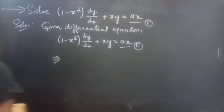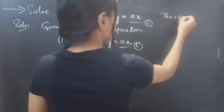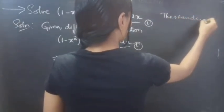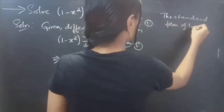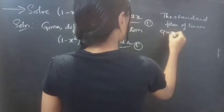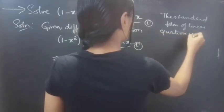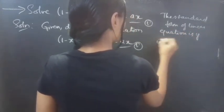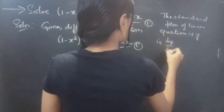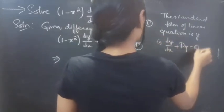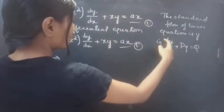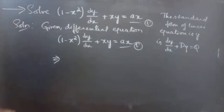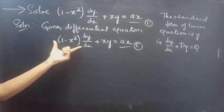We know that the standard form of a linear equation in y is dy/dx plus P into y equals to Q. If you notice, the coefficient of dy/dx in the standard form is 1, but here in the given equation the coefficient of dy/dx is (1 minus x squared).